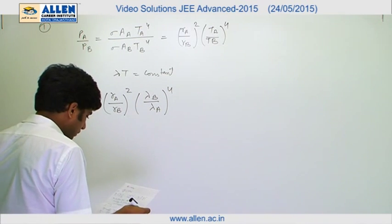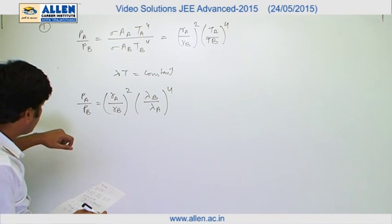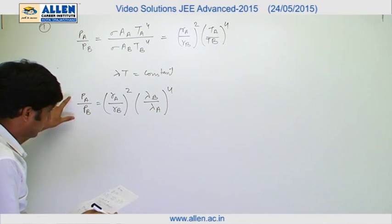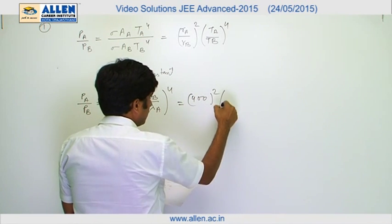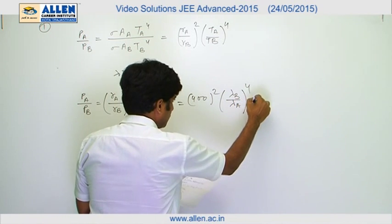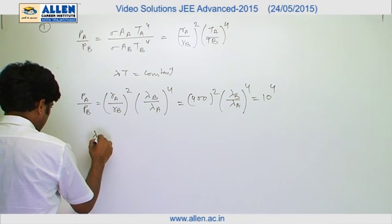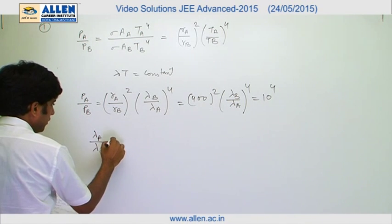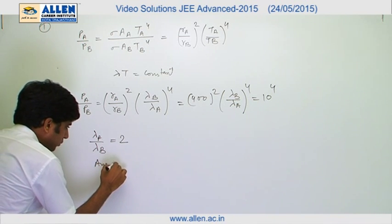Now in the question, radius ratio of the radii and ratio of the power are given. Therefore, it will be equal to 400 square lambda B upon lambda A to the power 4 equals to 10 to the power 4. From here we get lambda A by lambda B equals to 2. So the answer is 2.